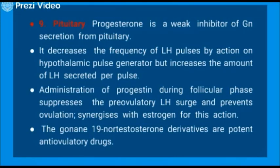Effect on pituitary: Progesterone is a weak inhibitor of gonadotropin secretion from the pituitary. It decreases the frequency of LH pulses by action on the hypothalamic pulse generator but increases the amount of LH secreted per pulse. A pulse here indicates the surge of the hormones — one flow comes, then later another flow comes. Administration of progestin during the follicular phase suppresses the pre-ovulatory LH surge and prevents ovulation. It synergizes with estrogen for this action. The 19-nor-testosterone derivatives are potent anti-ovulatory drugs.